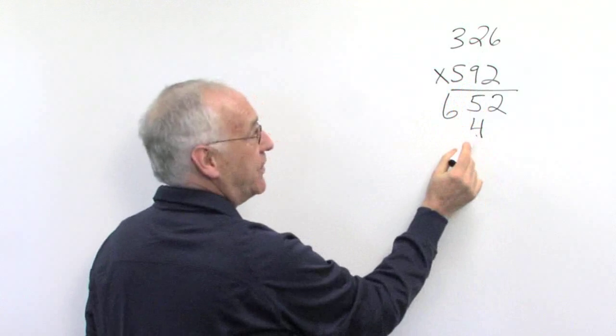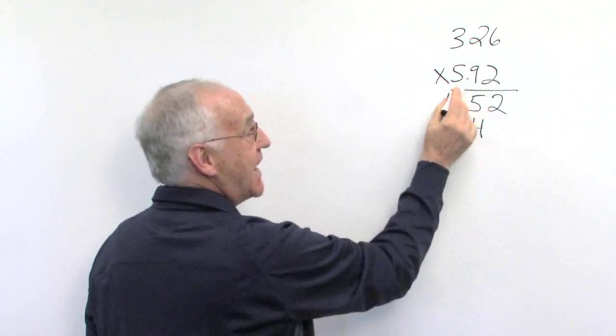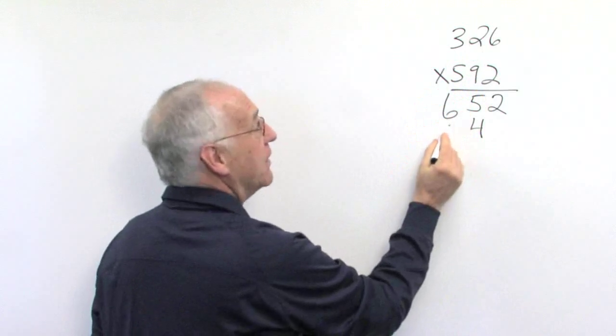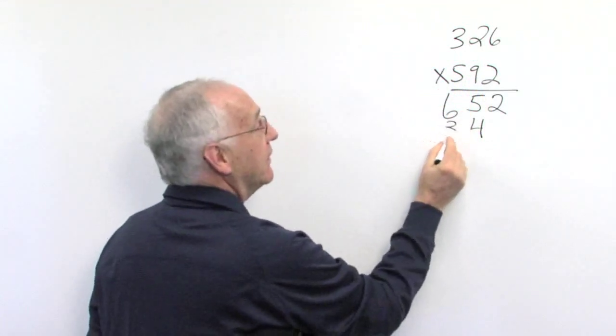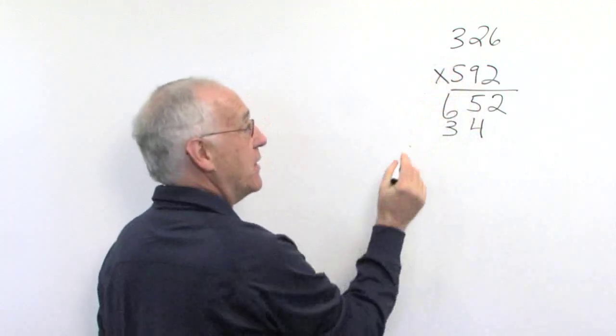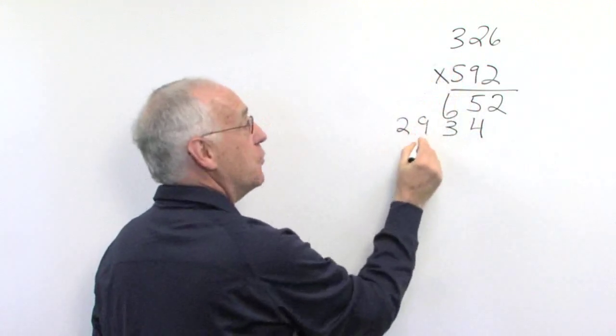9 times 6 is 54. Carry the 5. 9 times 2 is 18 and 5 more is 23. So we'll be carrying the 2. 9 times 3 is 27 and 2 more is 29.